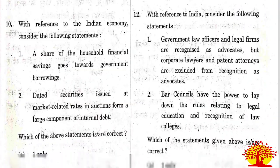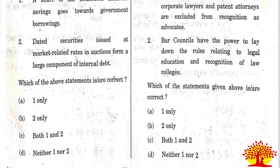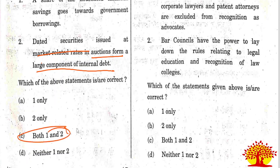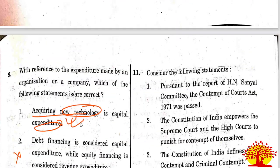Tenth question on Indian economy: Statement 1 - the share of household financial savings goes towards government borrowing. Statement 2 - debt securities issued at market-related rates in an auction form a large component of internal debt. Both statements are correct. Option C is the right answer. Questions 1 to 10 are related to economy; from 11 to 20 we will discuss polity questions.